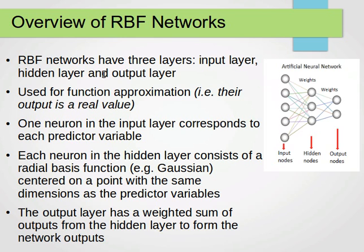These networks consist of three layers: an input layer, a hidden layer, and an output layer. They are usually used and derived from the theory of function approximation, so the output will in general be a real value. If we want to use it for classification, we may be able to output class probabilities.